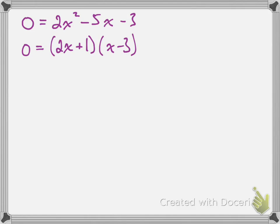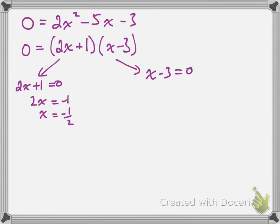I have something times something equals zero, which tells me each factor should equal zero. Suppose 2x plus 1 equals zero — I get x equals negative 1 over 2. And suppose x minus 3 equals zero — I get x equals 3. The points of intersection between the line and parabola will have x values of negative 1/2 and x equals 3.